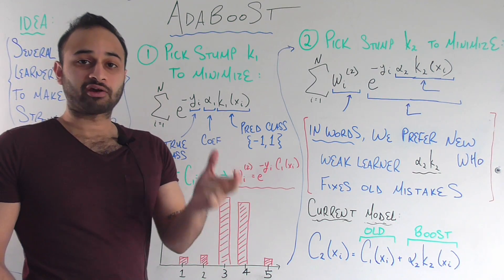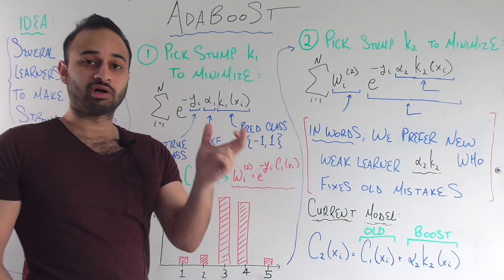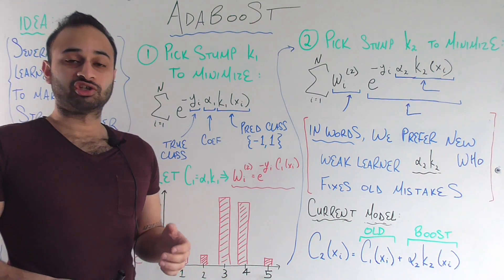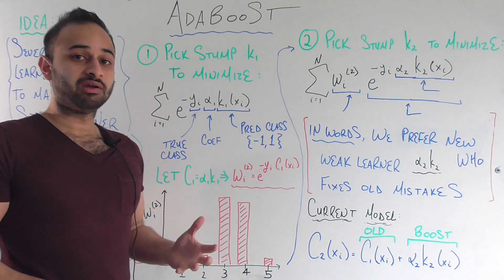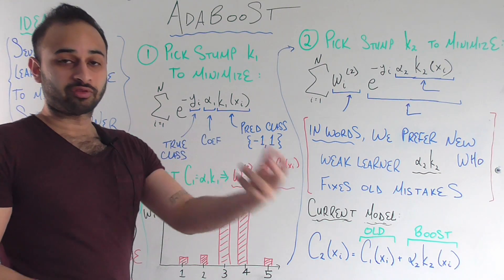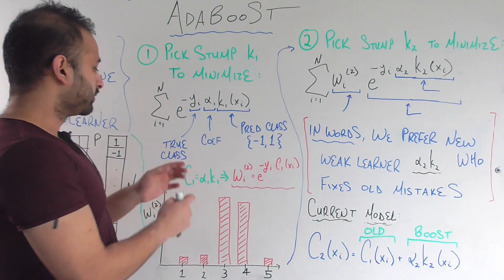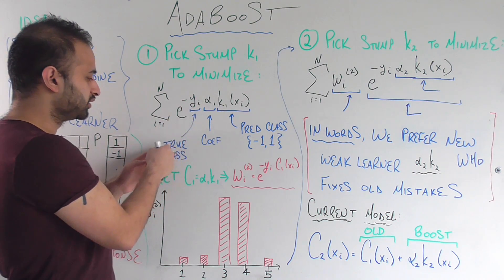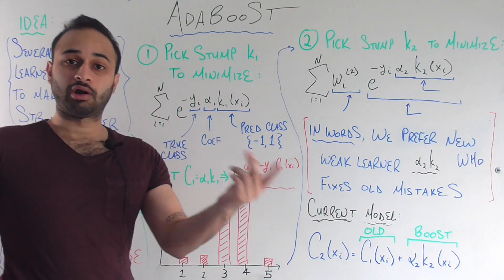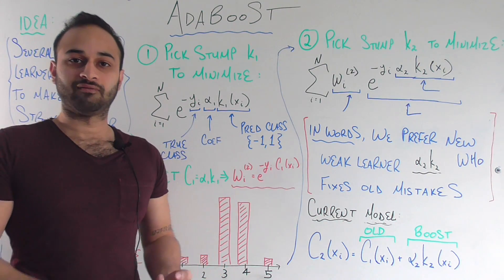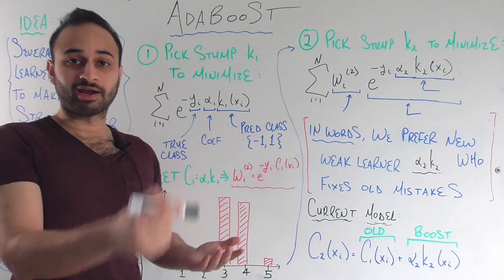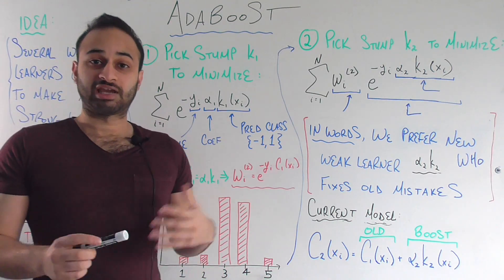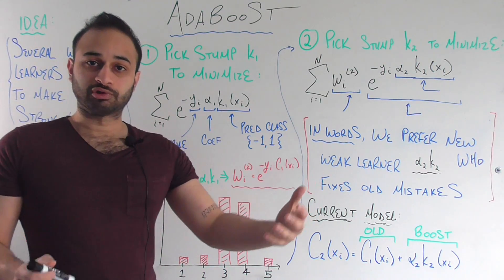So we're summing over i equals one to n — we're summing over all the observations in the training set. And for each one, we're calculating a measure of error about how far away our candidate decision stump would be from the truth about the student. The truth about that student is y sub i. Alpha one is just a coefficient in order to scale the next thing we'll see.